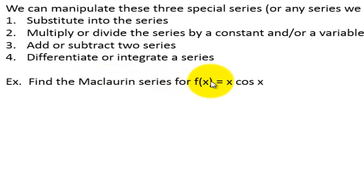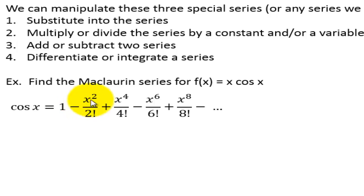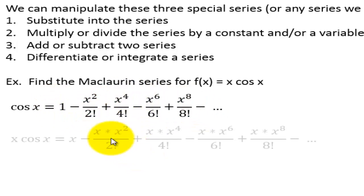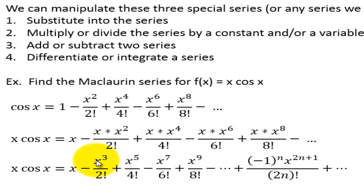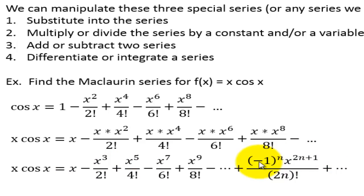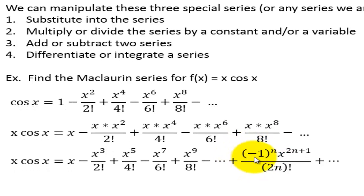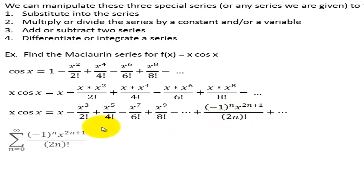Example: find the Maclaurin series for f of x equals x cosine of x. Cosine of x equals 1 minus x squared over 2 factorial and so on — remember cosine is the even function, so we have all the even powers. Now we're going to multiply this by x, distributing x to each of the terms. We end up with x minus x to the third plus x to the fifth and so on. The powers increase by 2, alternating signs, giving negative 1 to the n times x to the 2n plus 1 over 2n factorial. Here it is with summation notation starting n at 0.